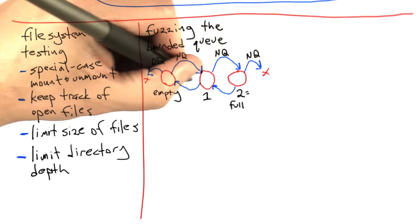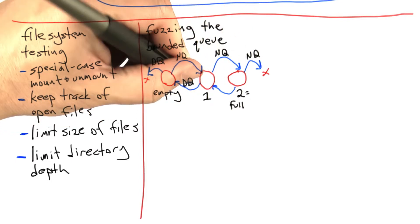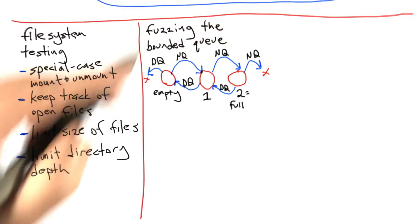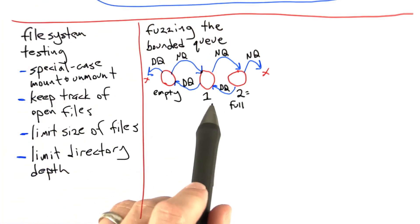Okay, from here, it should be pretty obvious what could happen. We can dequeue something going back to the empty state, or enqueue something going to the two element state, and let's just assume that that's full.